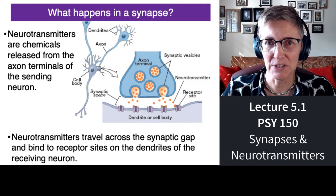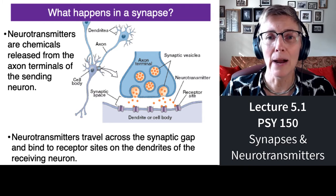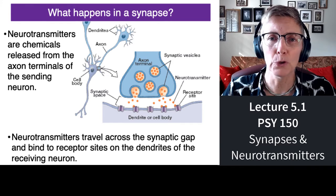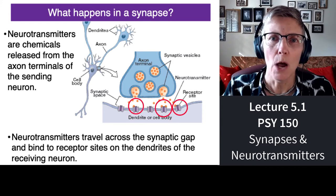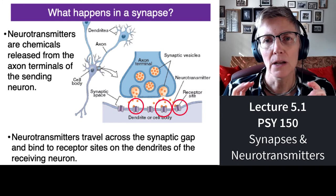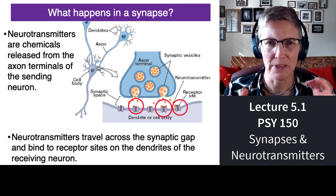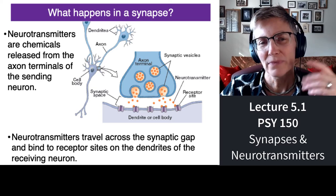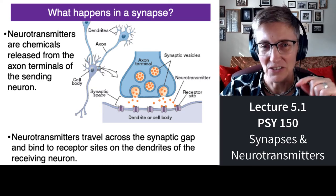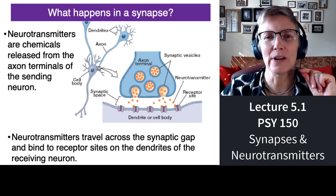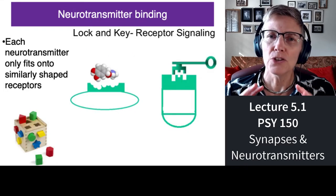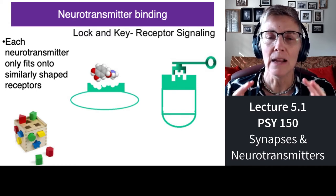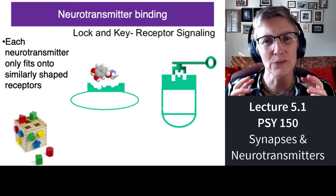The neurotransmitters are dumped into the synapse and migrate across that gap. Some of them are absorbed or grabbed by receptors that have a shape matching the neurotransmitter. When that happens, the signal starts to be generated in the receiving neuron. Each neurotransmitter has a different shape.